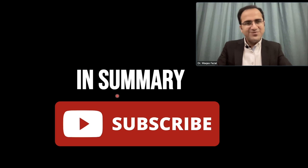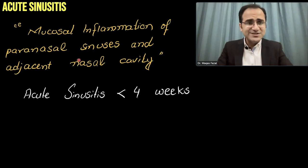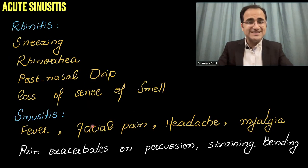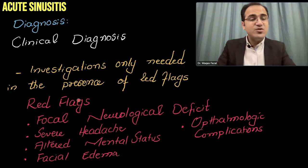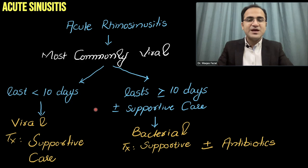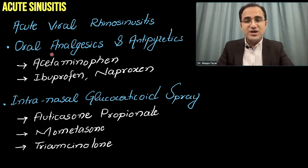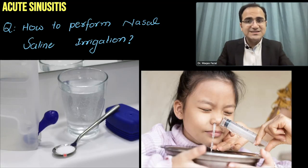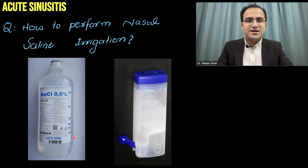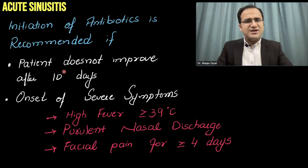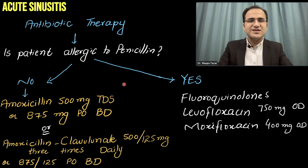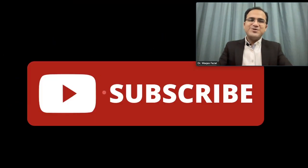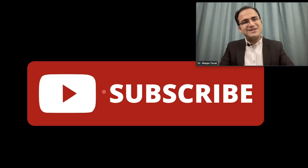In summary: acute sinusitis is most commonly viral and self-resolving; supportive care is the mainstay. Investigations are only needed if red flags are present. CT scan is the preferred imaging. Supportive care options include analgesics, intranasal glucocorticoid sprays, saline sprays, decongestant sprays, oral decongestants (for Eustachian tube dysfunction), oral antihistamines, and nasal saline irrigation. Antibiotics are only indicated in specific bacterial cases with severe or persistent symptoms.